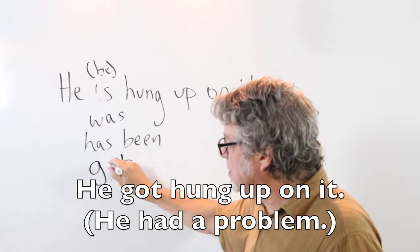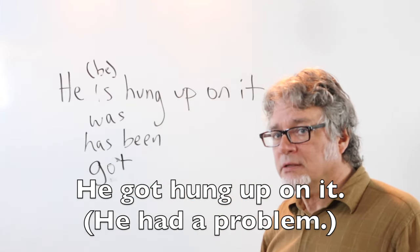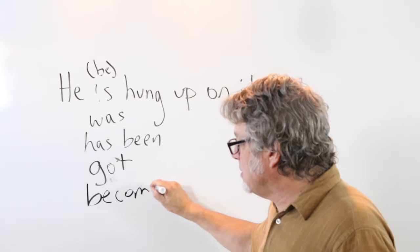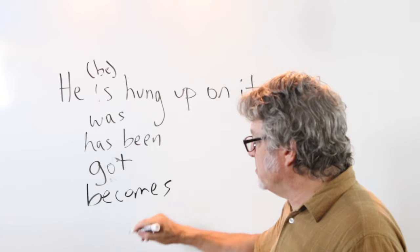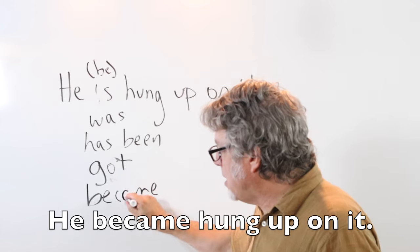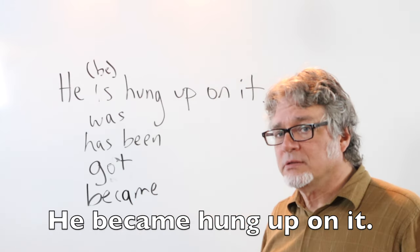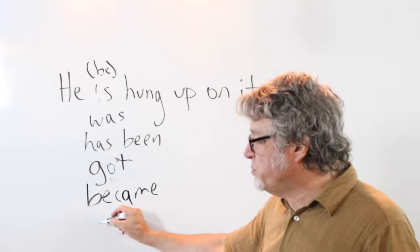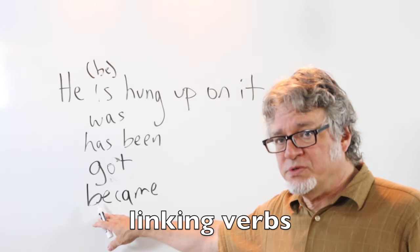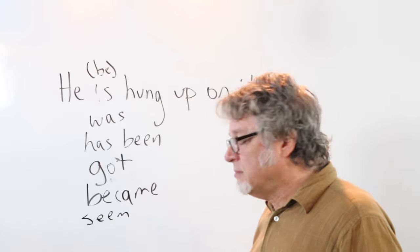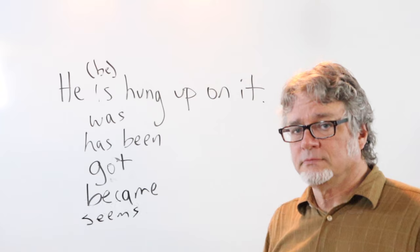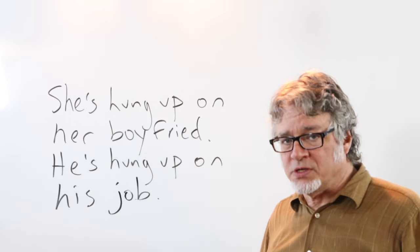You can also change 'be' to 'get' — remember that 'get' is sometimes a substitute for 'be.' So: 'He gets hung up on it,' 'He got hung up on it,' or you can use 'become': 'He becomes hung up on something' or 'He became hung up on it.' Other linking verbs similar to 'be' can be used too, such as 'seem': 'He seems hung up on it.'